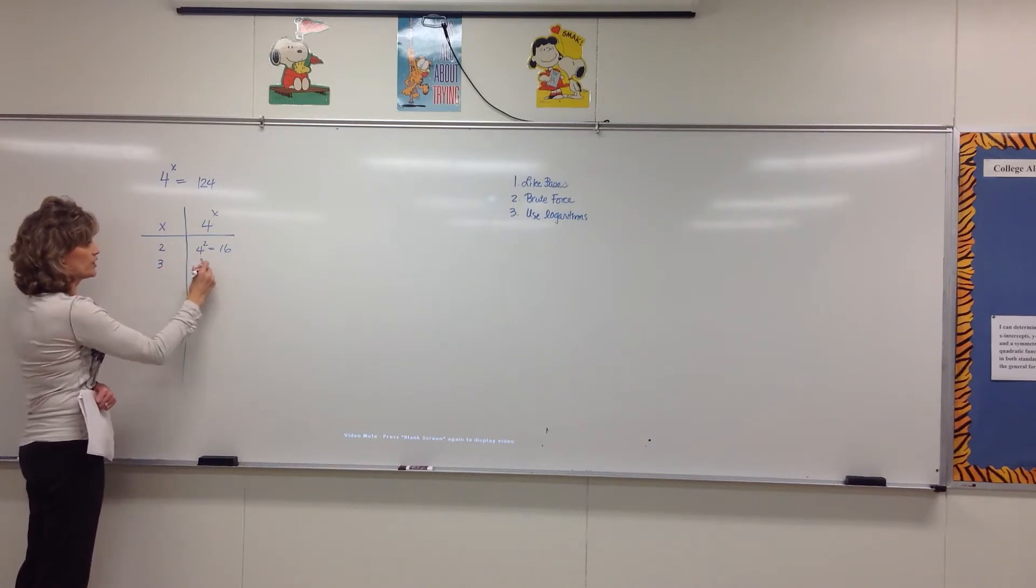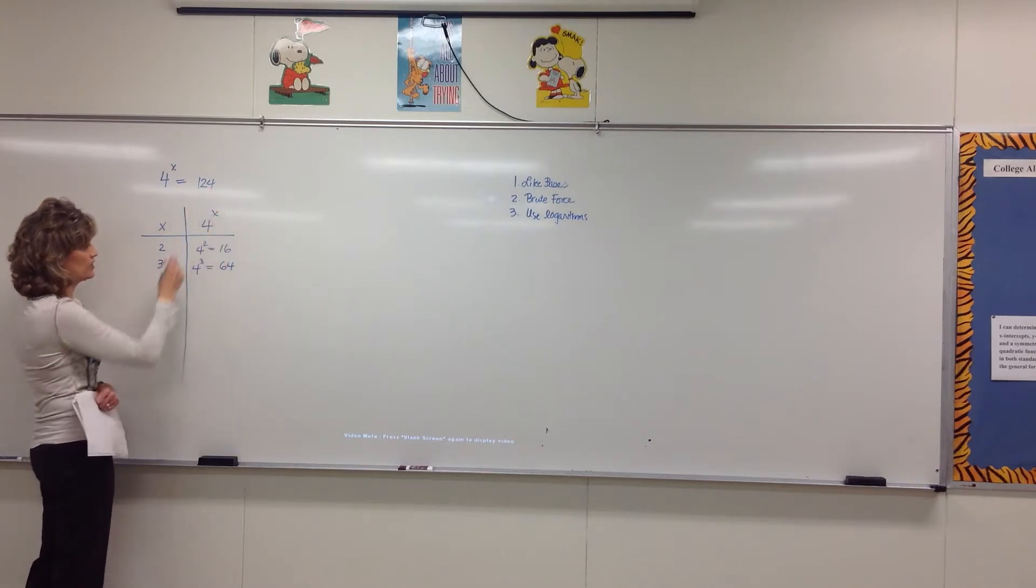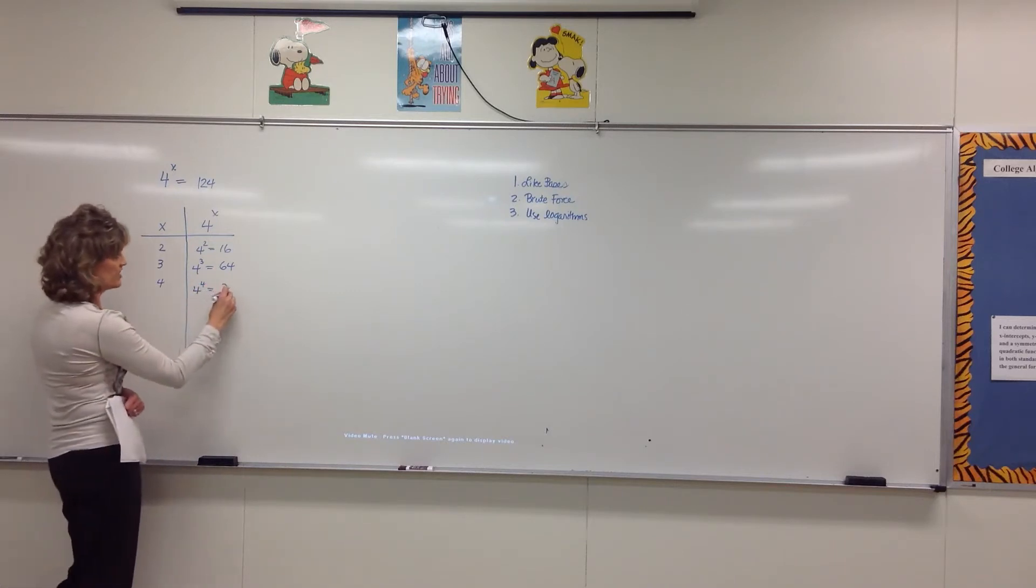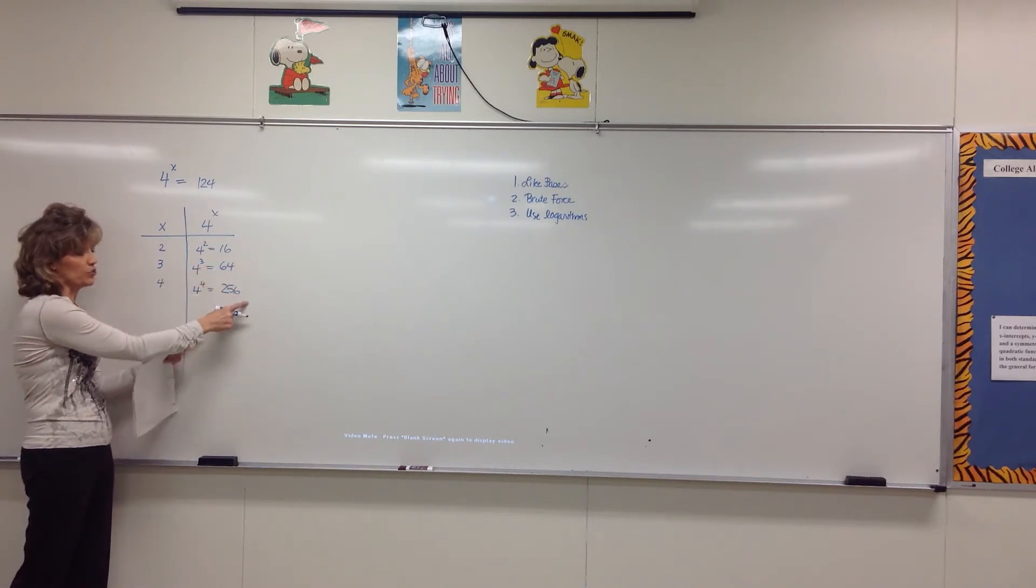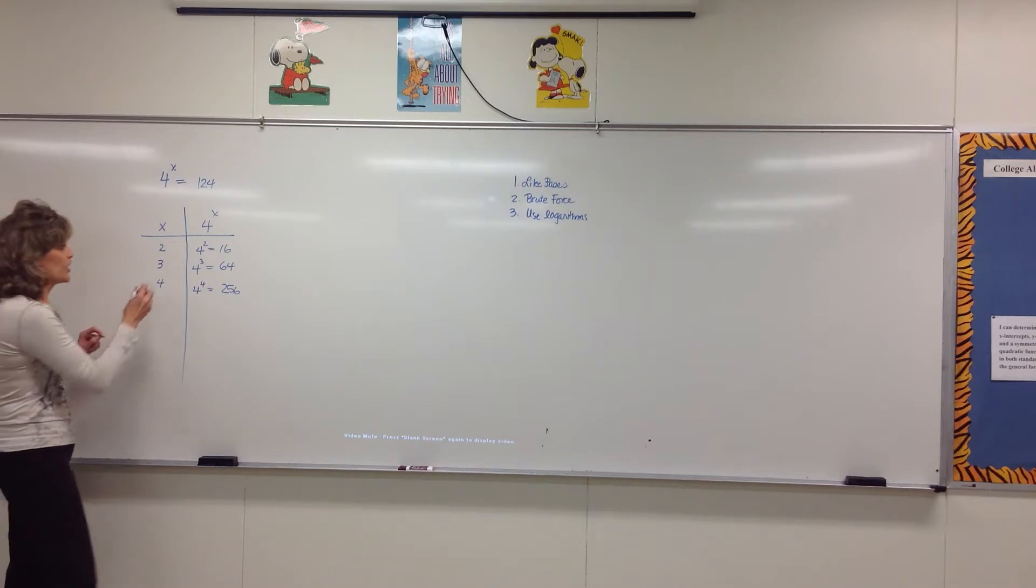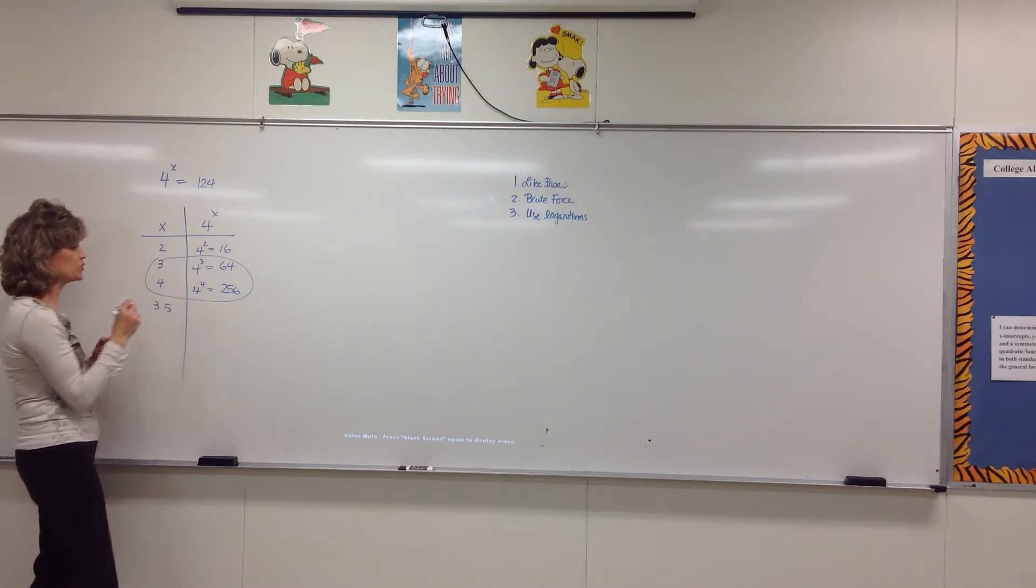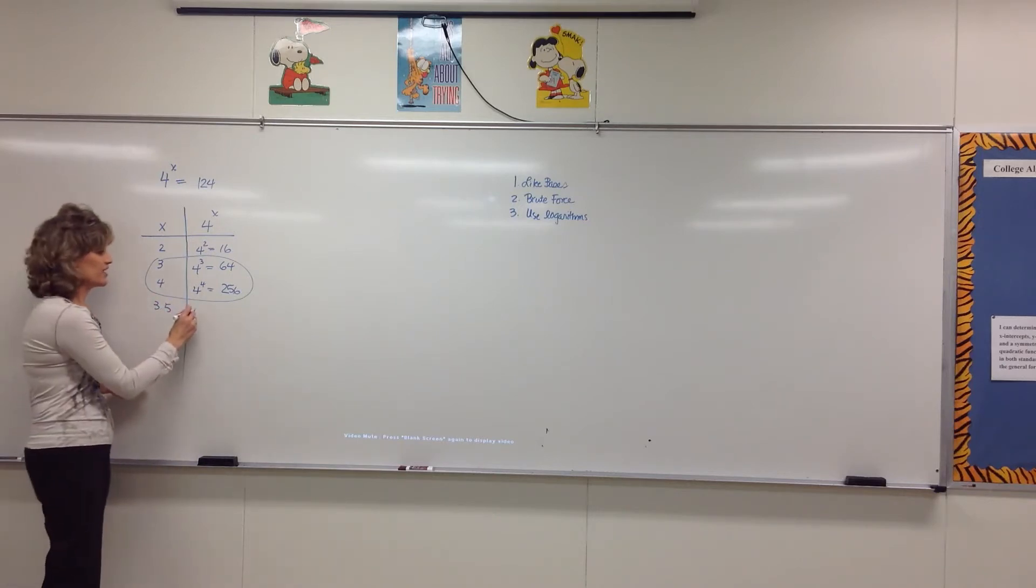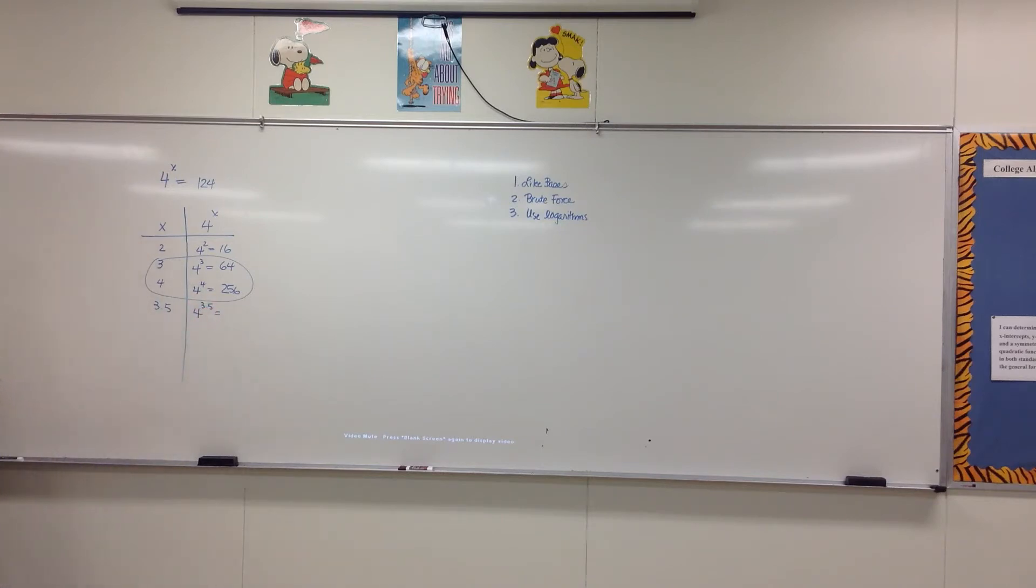If x is 3, 4 to the 3rd, you refer back to your chart. 4 times 4 times 4 is 64. Still too small. If x is 4, 4 to the 4th power, what is that? 256. Way too big. I'm needing 124, something between 64 and 256. So that suggests to me that the exponent I need is somewhere between 3 and 4. Pick something between 3 and 4, like 3.4, 3.5. We'll just jump right into the middle of it. Do this on your calculator. I need some rapid-fire calculator operators. So 4 to the 3.5, what do you get? 128.